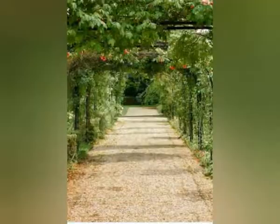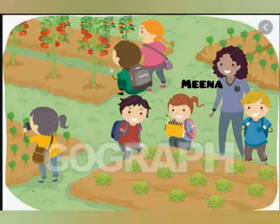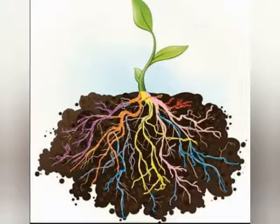Let's see in this lesson. A group of students went on a field visit to a garden. They went there along with their teacher. One of the students, Meena, looked at a sapling closely. Sapling is nothing but a baby plant. She asked her teacher that one part of this plant is green while the other part is brown in color. Why is it so, Miss?